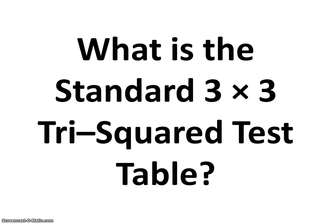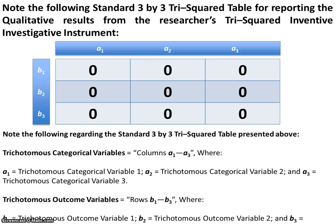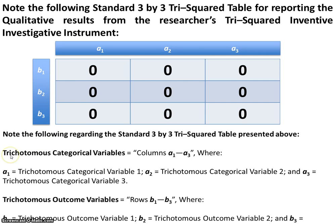What is the standard 3x3 Tri-Squared Test table? The standard 3x3 trichotomous table shows categorical variables A1, A2, A3 and outcome variables B1, B2, B3. As responses from the inventive investigative instrument are tallied, they appear in the respective cells. This is the standard table that appears in all reported Tri-Squared research.